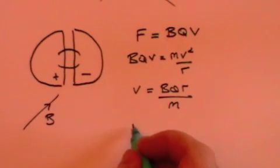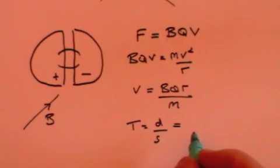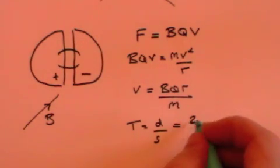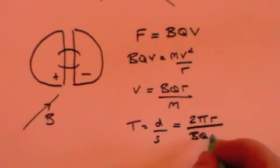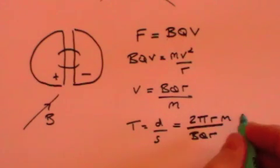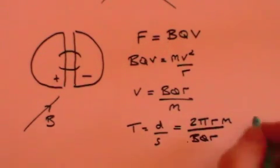The time for one orbit is the distance travelled divided by the speed. The distance for one cycle is 2 pi r. The speed is given by this formula, and so the time of the orbit is 2 pi r divided by BQR over m, which equals 2 pi m over BQ. You will see that there is no radius term in this formula.